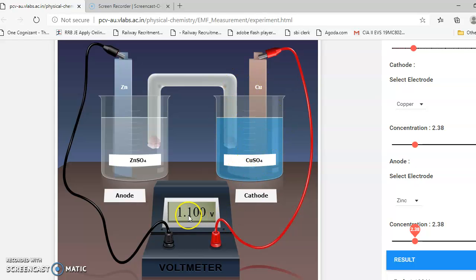With this method, we can determine the electrode potential of the zinc electrode or single electrode potential of the copper electrode. We can also vary the concentration; for different concentrations, we can calculate the electrode potential. You can try this using the link I have given.